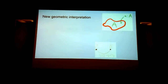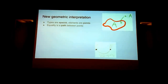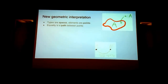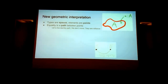The new interpretation that Homotopy Type Theory brings is: types are spaces, elements are points, and equality is a path between two points. In the top picture we have a space A and a point little a in that space — that's how we interpret a term of type A. Reflexivity is the identity path; we go nowhere because it's truly equal.